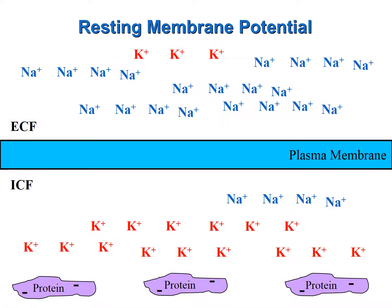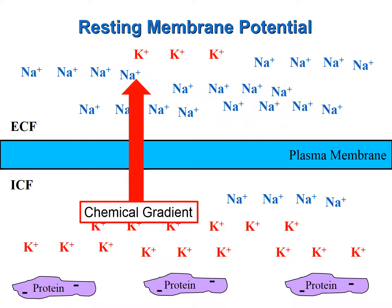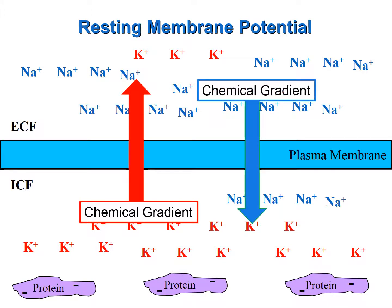At the resting membrane potential, two chemical gradients exist as well. Because the potassium ion concentration is greater in the intracellular fluid, a force potentially will move potassium ions from the intracellular fluid to the extracellular fluid. And conversely, because the sodium ion concentration is greater in the extracellular fluid than the intracellular fluid, potentially a force will move sodium ions from the extracellular fluid into the intracellular fluid — both the potassium ions and sodium ions moving down their concentration gradients.